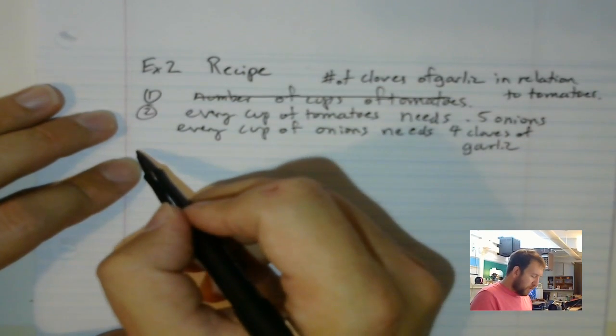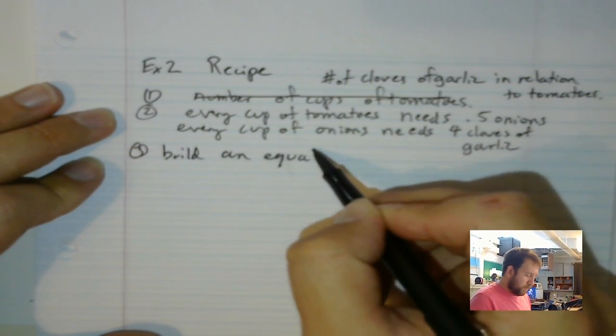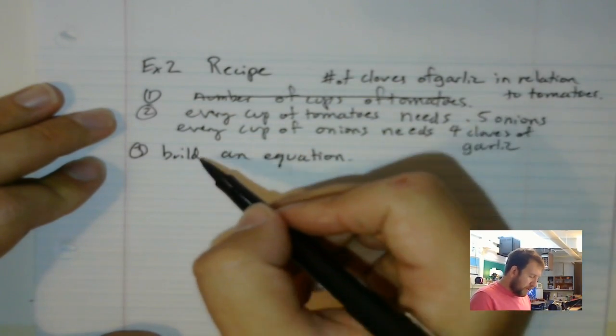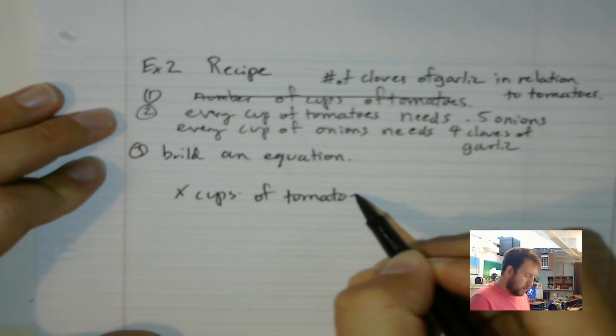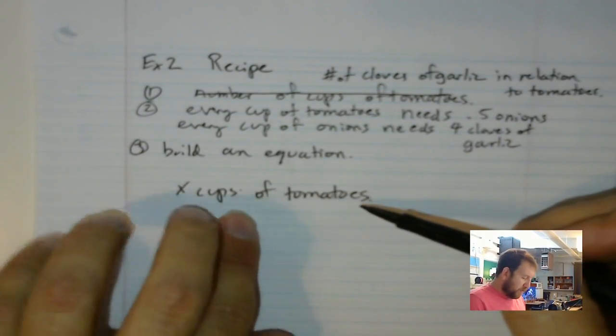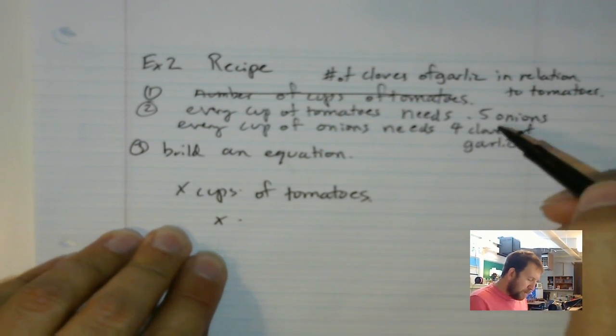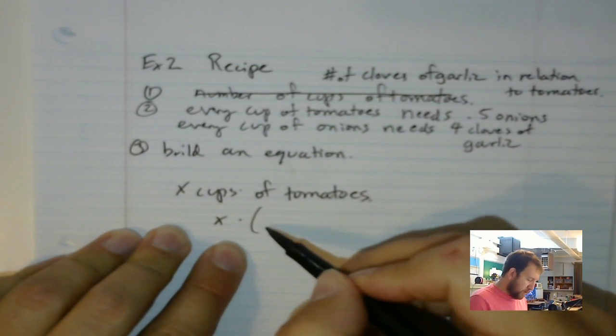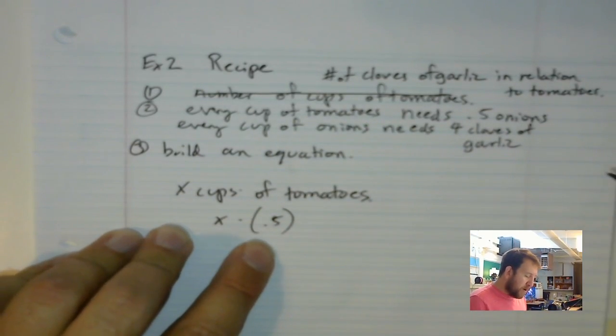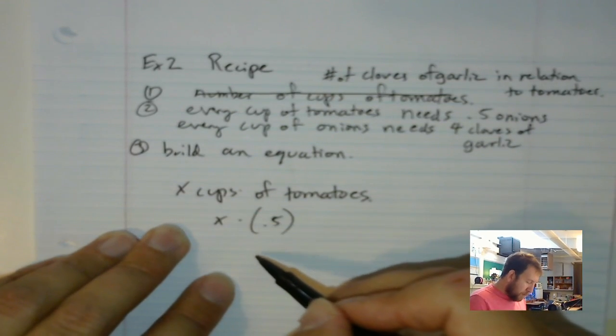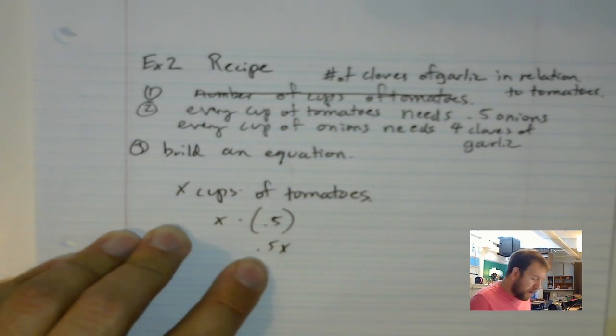So for this one, I'm going to build an equation. So I can say that we have x cups of tomatoes. So if I have x cups of tomatoes, I need to figure out how many cloves of garlic that turns into. So for x cups of tomatoes, I can multiply that by 0.5 onions times 0.5 onions. Because every cup of tomatoes needs 0.5 onions. And this will tell me right now the total amount of onions that I need. So if I use this, 0.5 x, that tells me my onions. And for using this, I can get to the amount of garlic that I need.